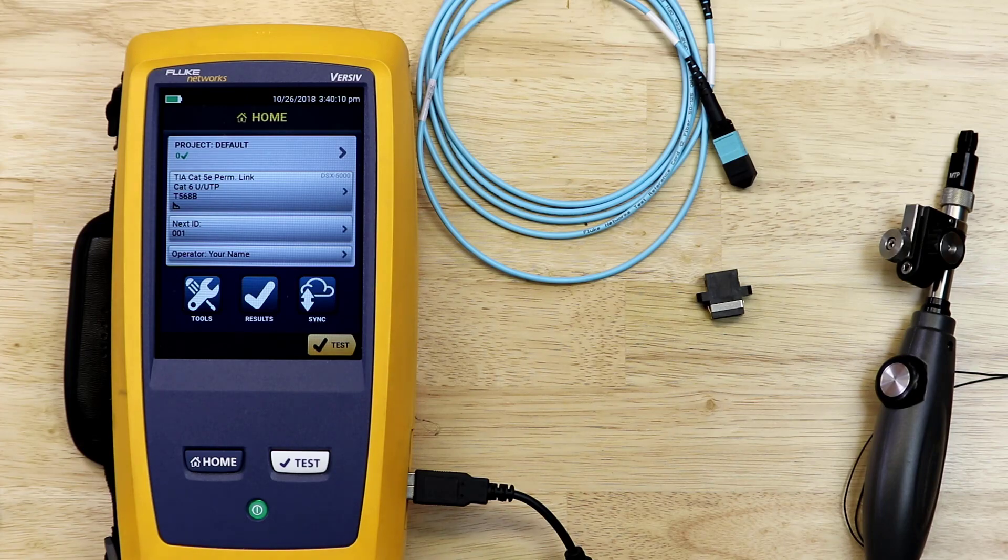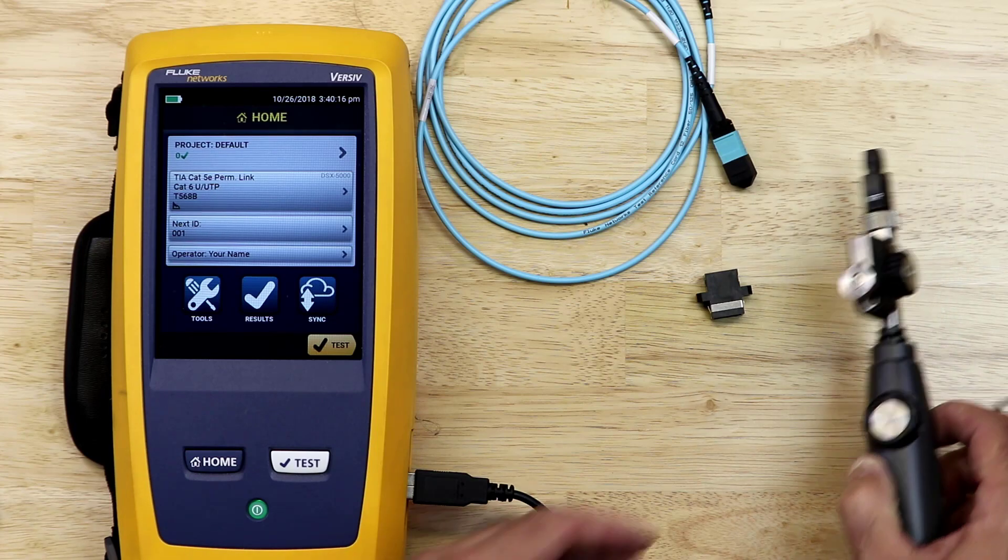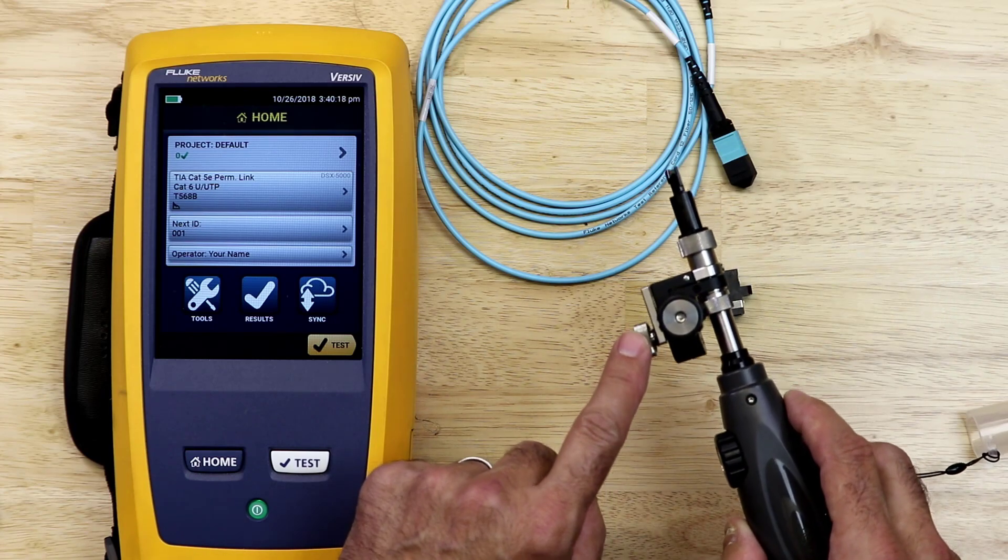Prior to testing any of the cables, it is important to make sure the end faces of each of the cables is clean. This is accomplished by using the Fluke Network's Fi7000 fiber inspection scope with an MPO MTP adapter at the end of the camera.